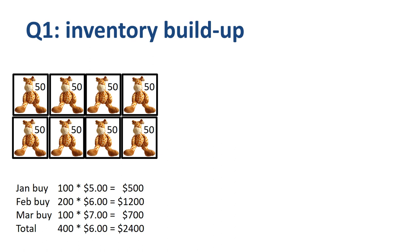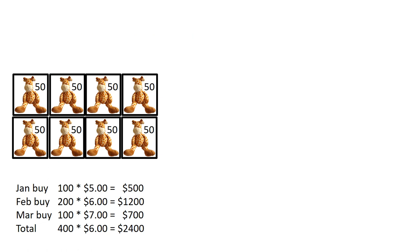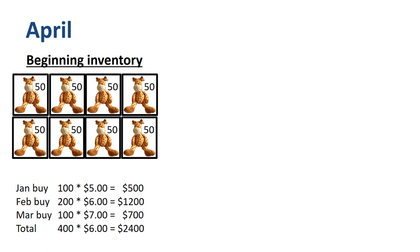In the warehouse, the company does not specifically identify the boxes — they just stack them on a big pile. For cost accounting and inventory valuation purposes, the company does keep track of the timing of the buys and the unit cost, in layers. The ending inventory of Q1 is the beginning inventory of Q2.